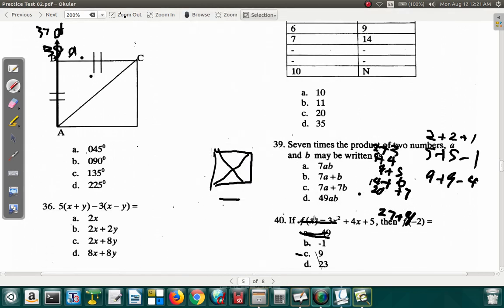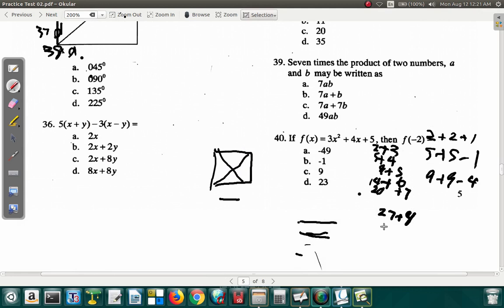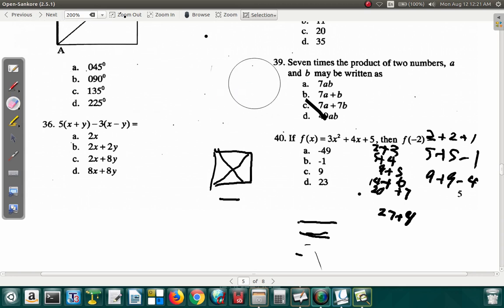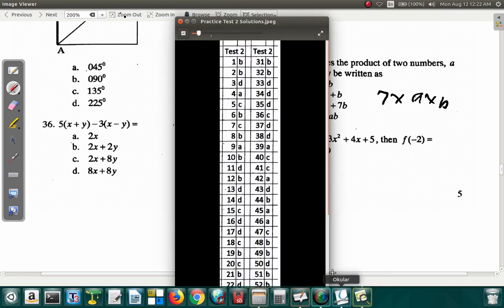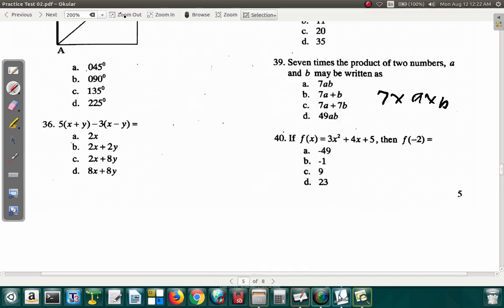Let's look at 39. Let's erase these and go on to 39 and then 40. 39 says, 7 times the product of two numbers a and b may be written as 7 times a times b. So it's 7ab. Question 39 is A.